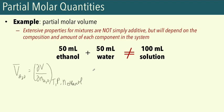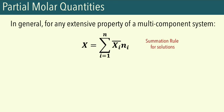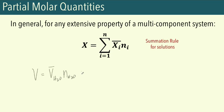If we know the partial molar quantities, how can we get the total extensive property? We can do that using the summation rule for solutions — a general rule for extensive properties in multi-component systems. This says we can get the total extensive property of a multi-component system by multiplying the partial molar quantity of a component by the number of moles of that component and summing over all components. For total volume in the ethanol-water system, volume equals the partial molar volume of water times moles of water, plus the partial molar volume of ethanol times moles of ethanol.